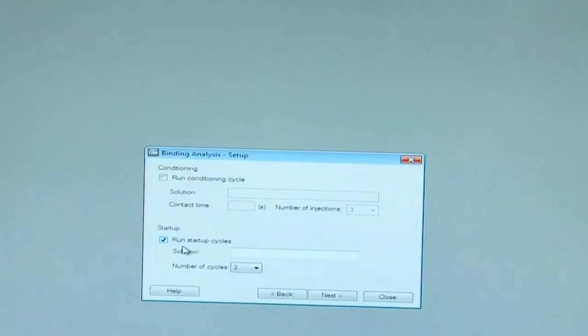Startup cycles are cycles of buffer used for equilibrating the system. Here basically buffer is used as analyte. We can type as HBS-EP-plus buffer. And from the pull down menu, we select three cycles. Generally, for binding experiments, three cycles are selected.